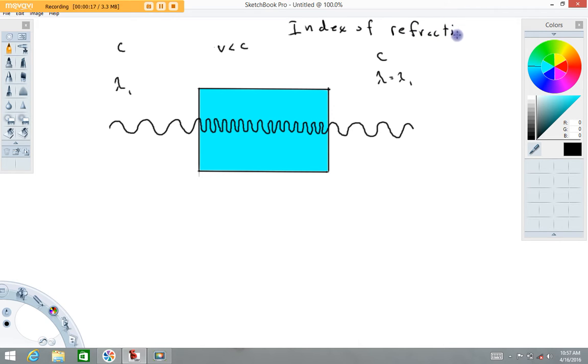So the index of refraction, what does that mean or what is that thing? So what we're looking at, this is representing a light wave.